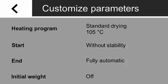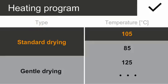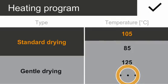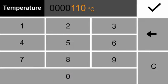In this view, all adjustable parameters are listed. Please tap on Heating Program to adjust the temperature. Select Standard Drying and then choose Manual Input, which is represented by three points. Please enter 110 as the drying temperature and confirm your input.